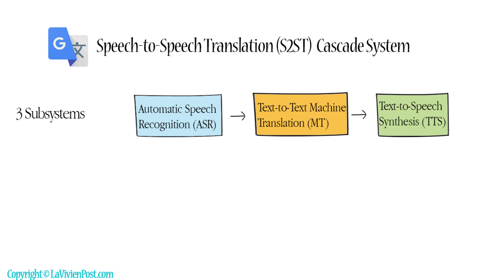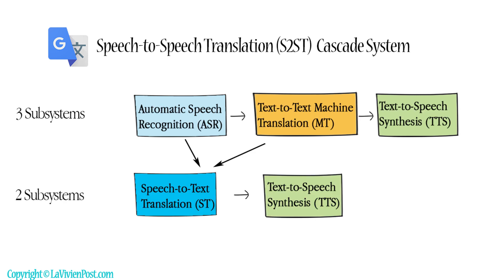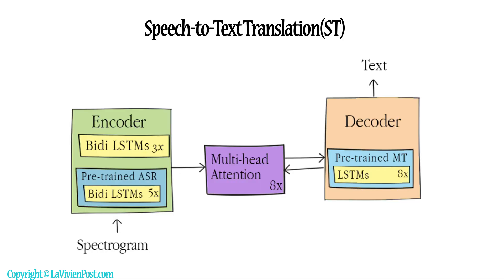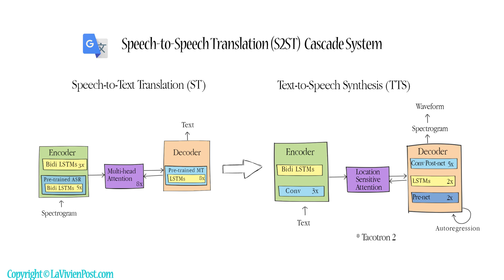In the past, conversation translation used a cascaded system of three components: automatic speech recognition, text-to-text machine translation, and text-to-speech synthesis. The ASR and machine translation were combined into a single end-to-end speech-to-text translation system, where the encoder has pre-trained ASR and the decoder has pre-trained MT. After translated texts are generated, they are sent downstream to text-to-speech synthesis.